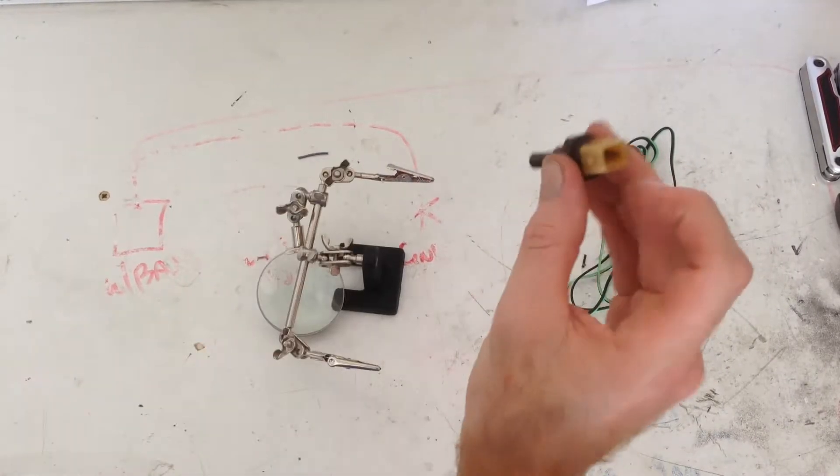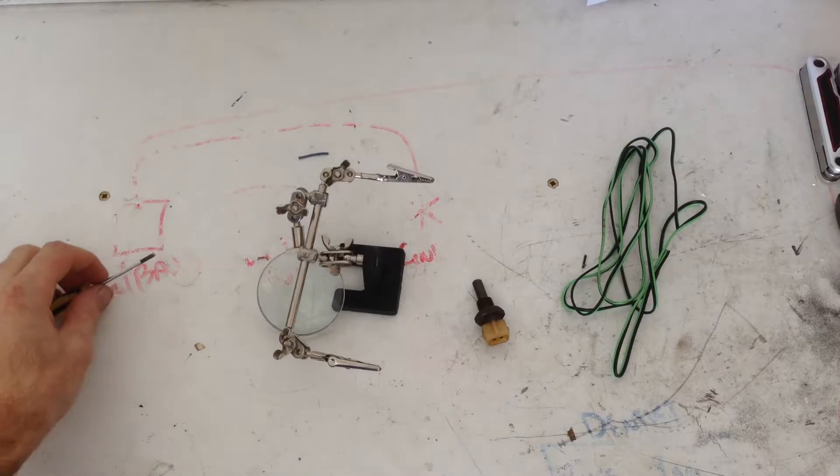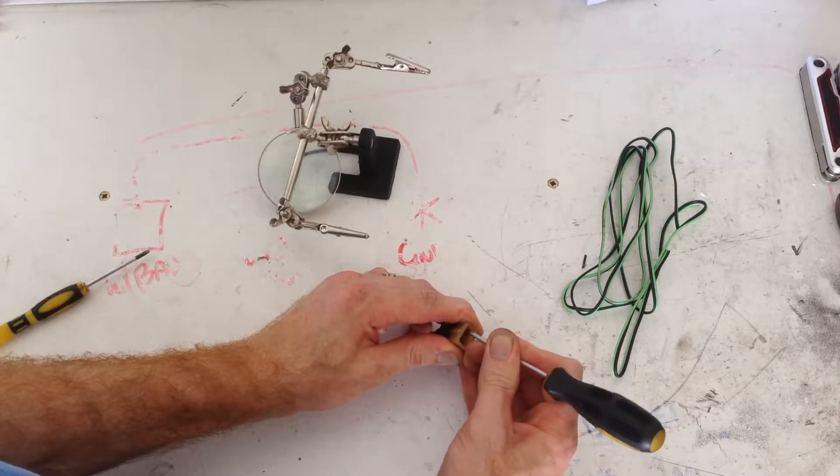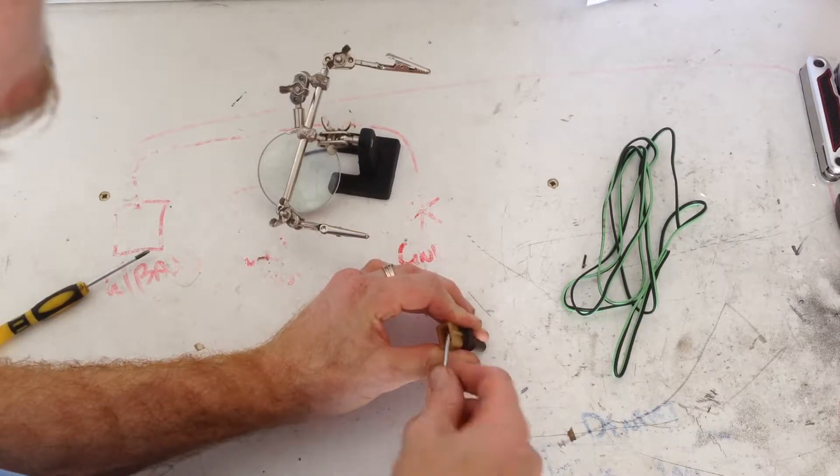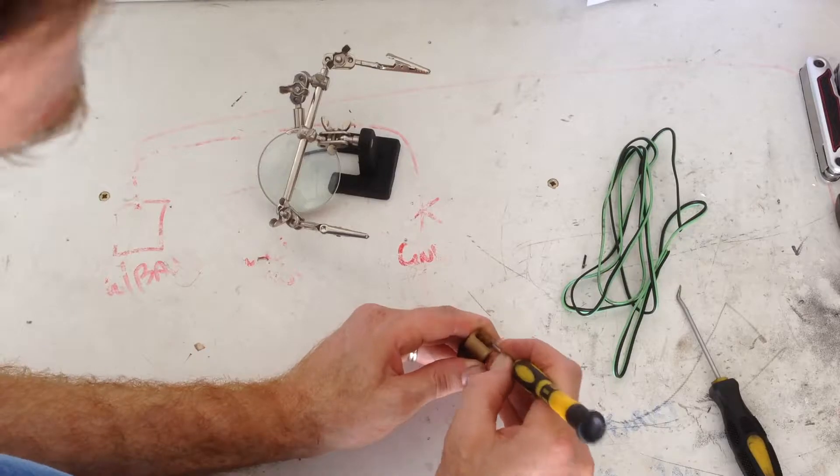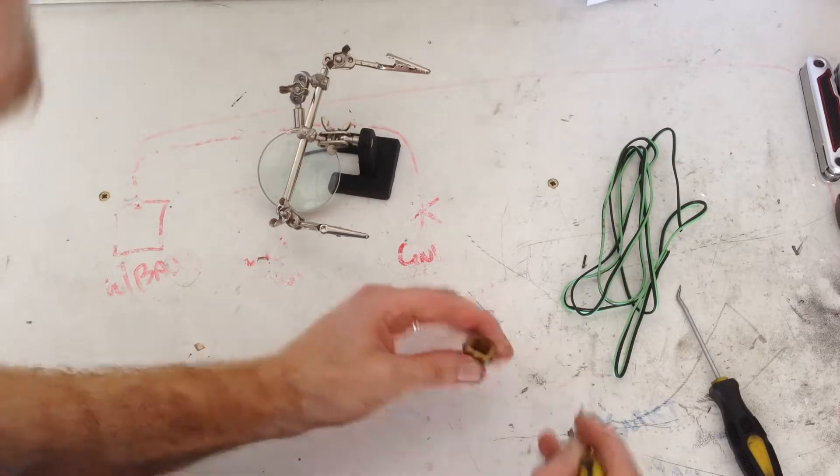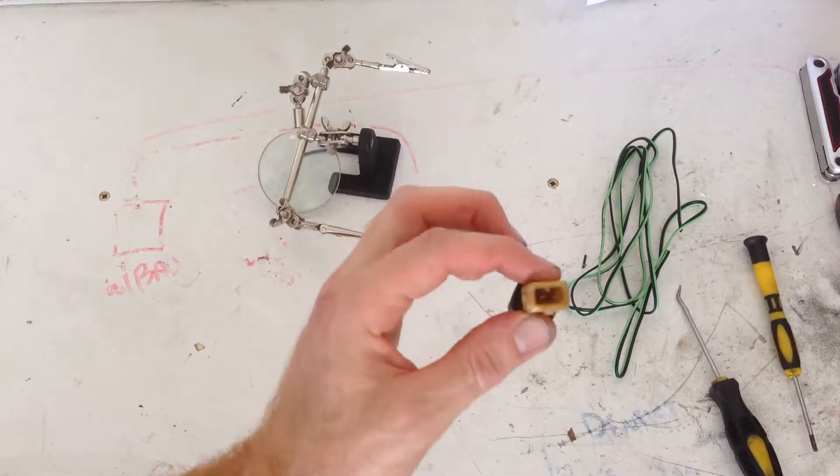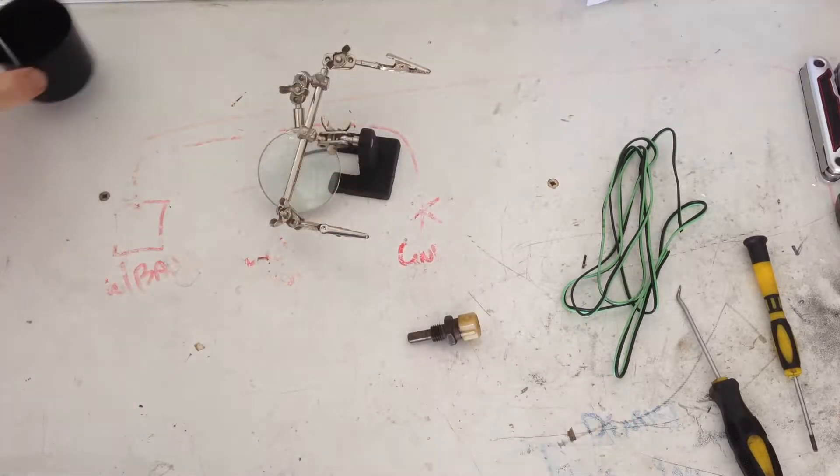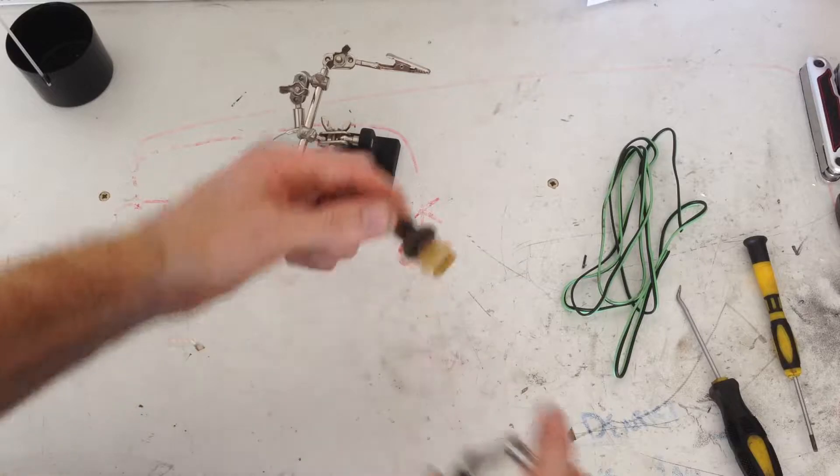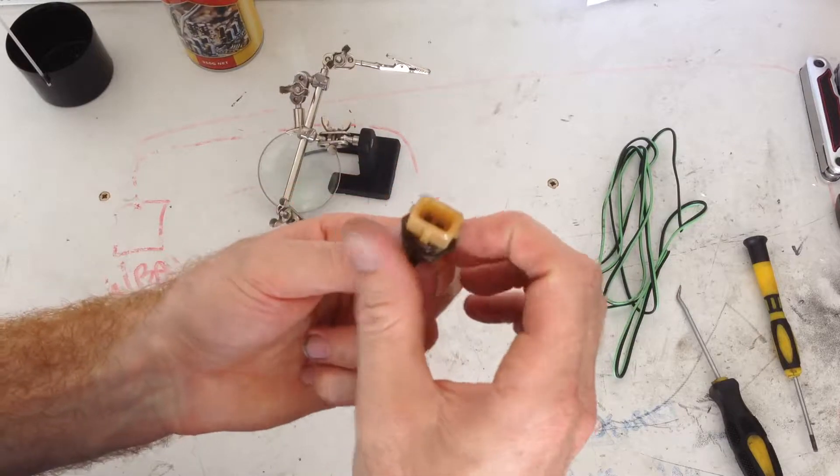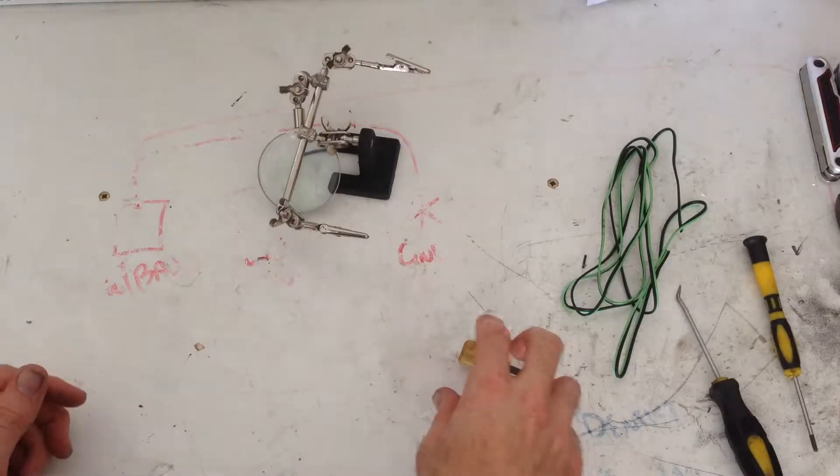Alrighty, so we've got our coolant thermosensor. I need to get the terminals a good clean. I'm going to use a scrubber and a little scrubber. Alright, now what I'm going to do is give it a spray with some contact cleaner.